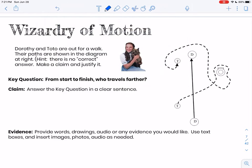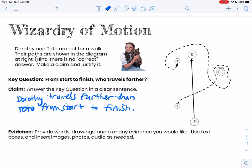So this would be an example of somebody that said that Dorothy travels further. So my claim would be Dorothy travels further than Toto from start to finish. Your claim statement should look really good. So Dorothy's claim statement: Dorothy travels further than Toto from start to finish.